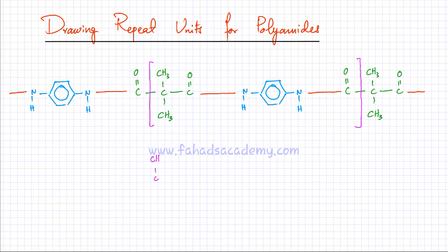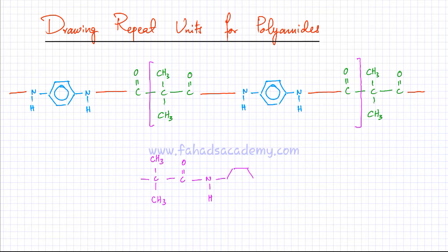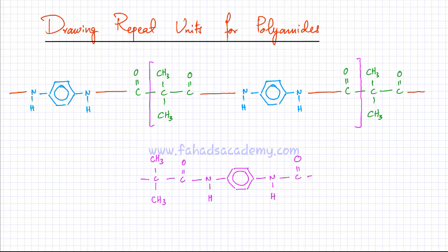I'm going to draw the repeat unit now. It's CH2, CH2 — this is my continuation bond — followed by C double bond O, then I have an NH attached to a benzene ring. Then again there's an NH followed by C double bond O, and then there's another continuation bond. This is my repeat unit, and I write N, which means it's going to repeat N number of times. This is how you draw or write the notation in terms of repeat units.